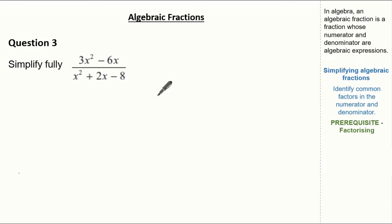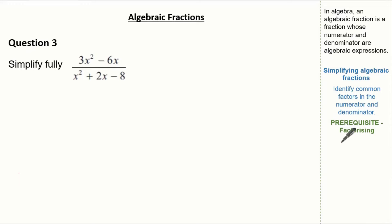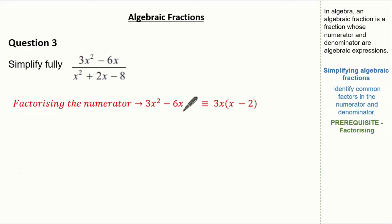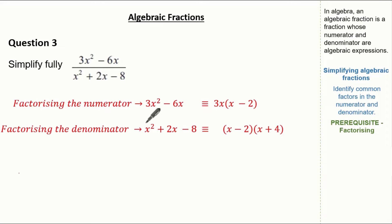Now let's look at a slightly harder question where we are asked to simplify fully 3x squared minus 6x over x squared plus 2x minus 8. This is slightly harder because before the factors were very clear, so now we have to use our prerequisite knowledge of factorizing. Factorizing 3x squared minus 6x gives me 3x bracket (x minus 2). And using our knowledge on factorization of a quadratic, we know we have (x minus 2)(x plus 4).